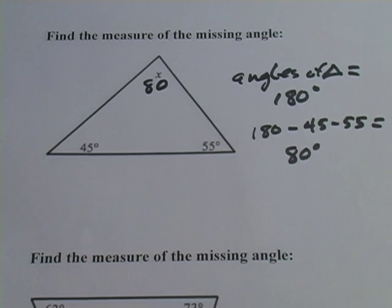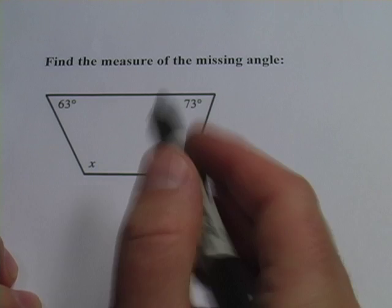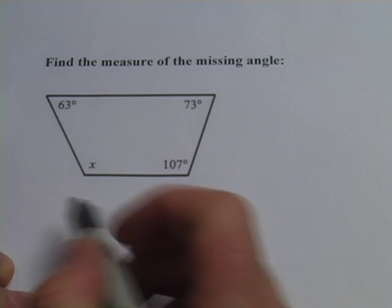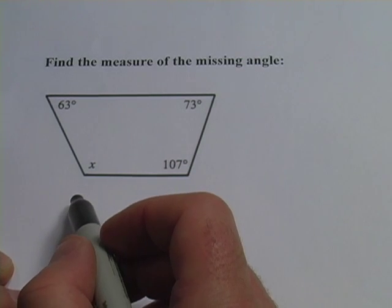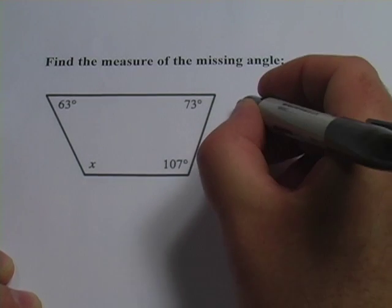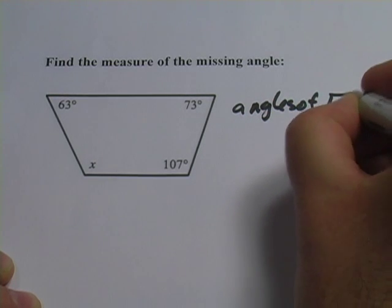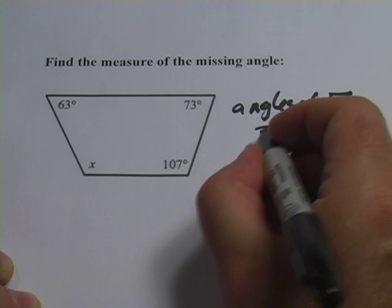Let's look at one of these quadrilateral problems next. Same kind of thing. You're given three angles and you have a fourth one to find. The key to know here, it's a little bit different from the triangle, but the angles of a quad add up to 360.